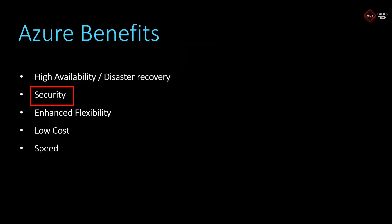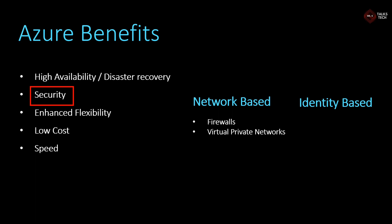Azure offers great security policies, either as network-based security or as identity-based security. In the network-based features, firewalls and virtual private networks can be configured, which restricts external IPs from accessing the services or the data. For identity-based security, Azure offers RBAC, which stands for role-based access control, which is more like a user with a username and password. The user can use credentials to authenticate and use any services provided. It also supports MFA, which stands for multi-factor authentication, giving additional security like receiving an OTP on your mobile phone on top of the username and password.